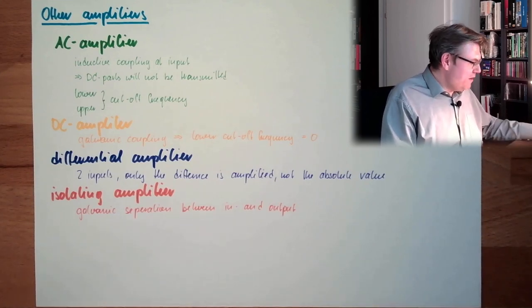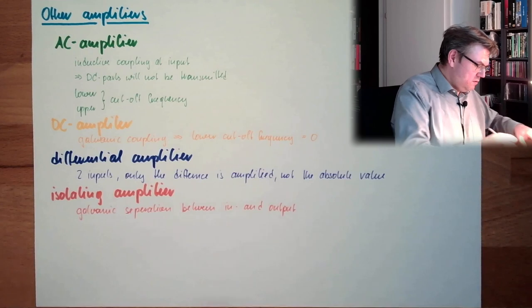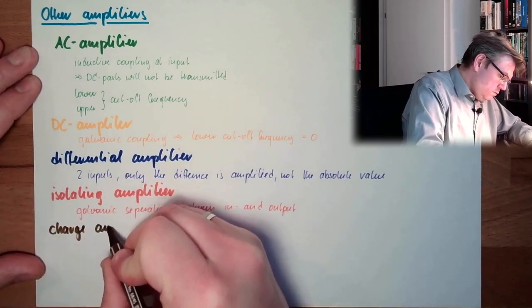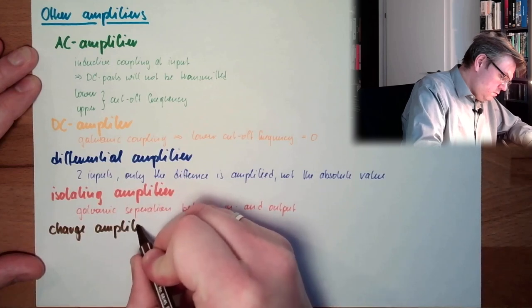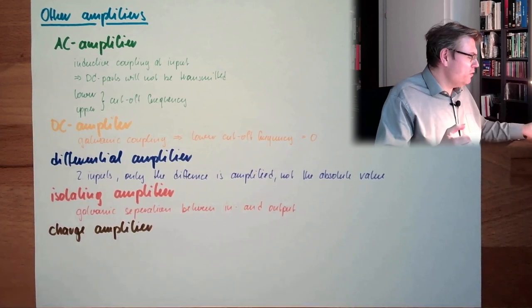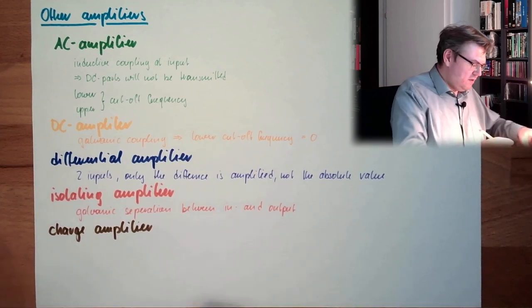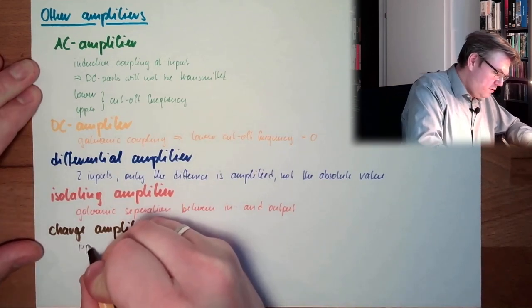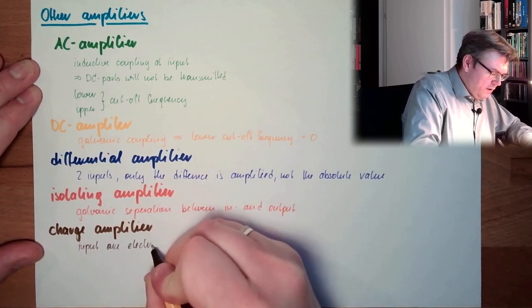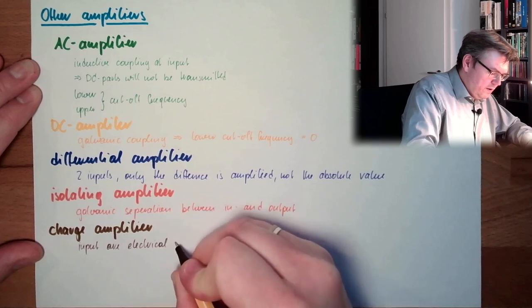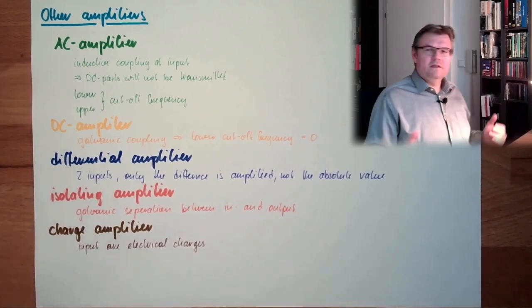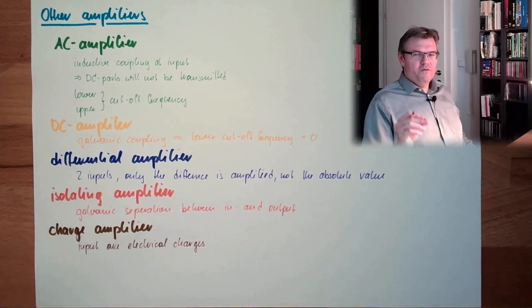Then we have a charge amplifier. There the input is not a voltage but charges. Input are electrical charges. Where is the difference? Well, charges are usually very few.